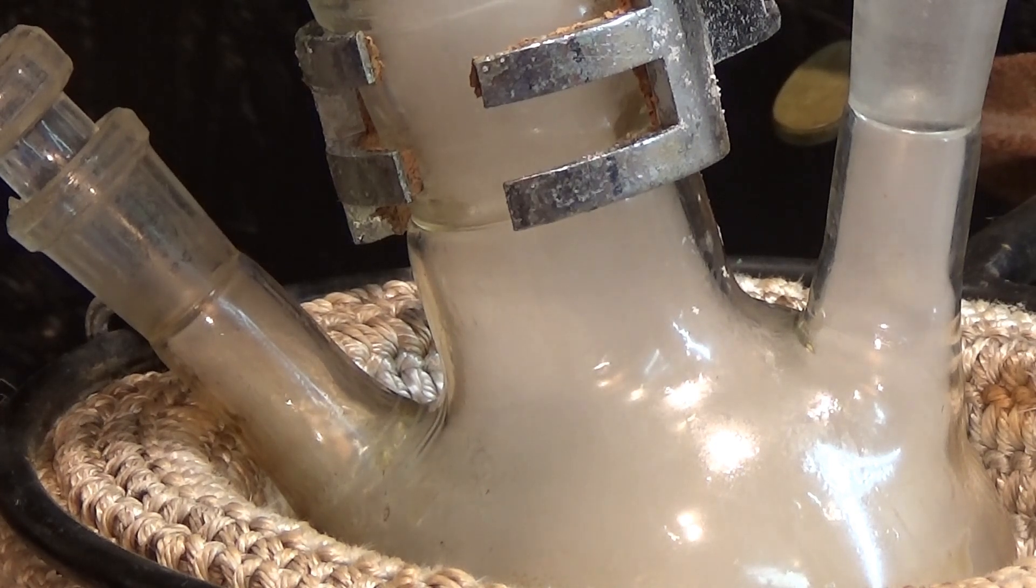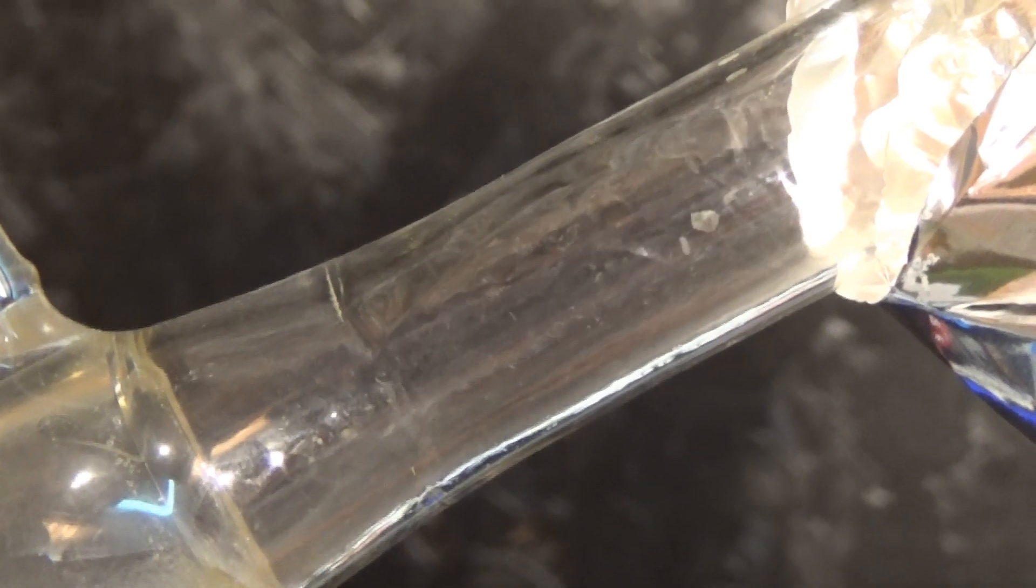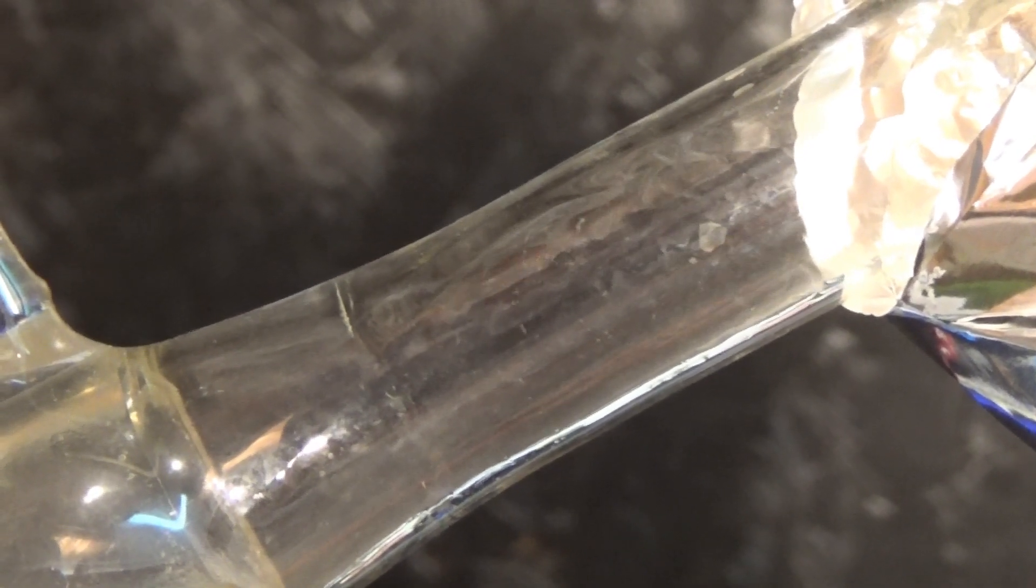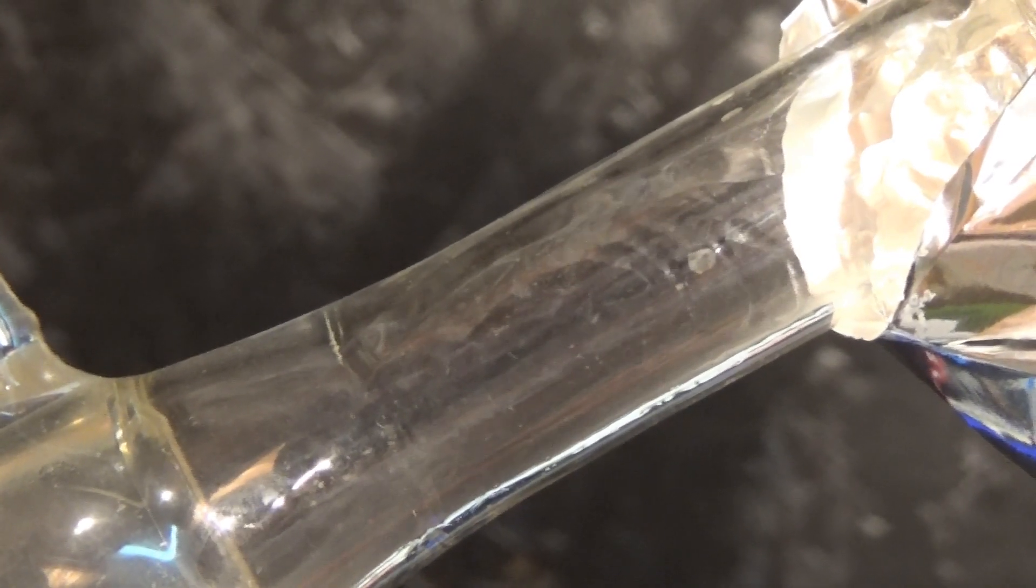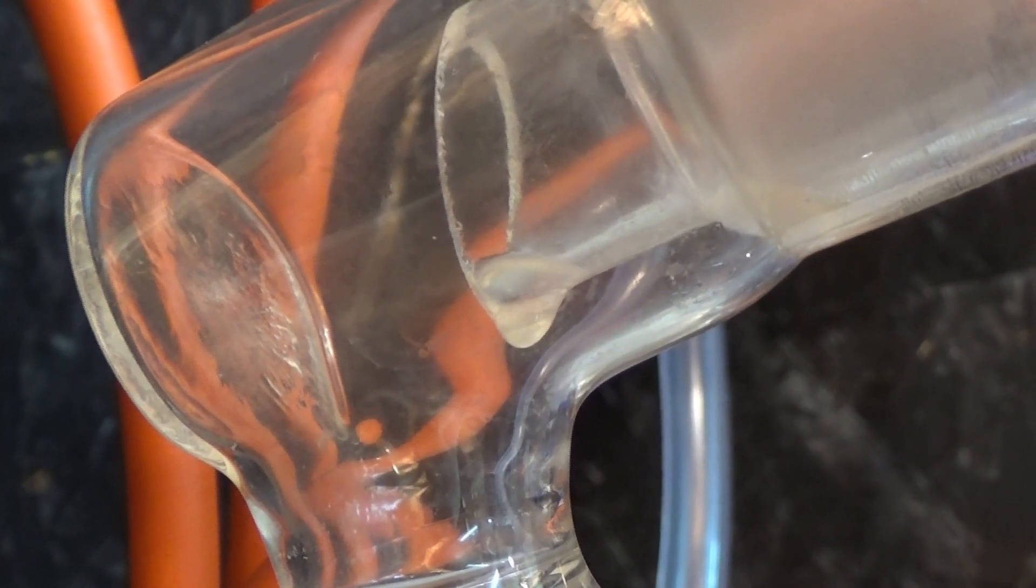This is perfectly normal for an amateur setup and can be dealt with later when the raw styrene is fractionally distilled. Also, it helps to insulate the entire setup with aluminum foil to reduce reflux of the styrene, which ultimately leads to more pyrolysis and a higher percentage of contaminants.